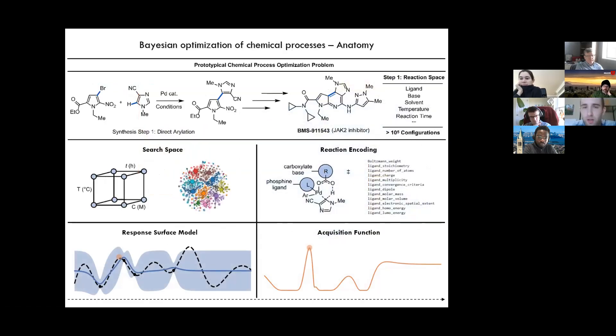So in chemical process optimization, basically developing a Bayesian optimizer comes down to, you know, considering, you know, in the context of a prototypical chemical process optimization problem, which has these mixed categorical and continuous variables. Basically, it comes down to defining a search space, developing or defining a reaction encoding. So that's how we're going to numerically describe the reactions to the optimizer, tuning a response surface model, and selecting and tuning an acquisition function.